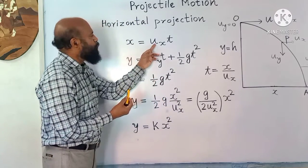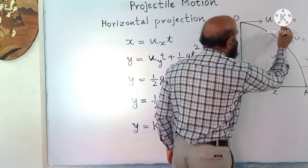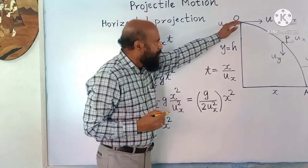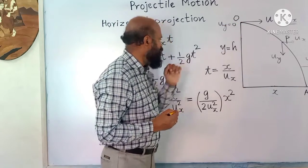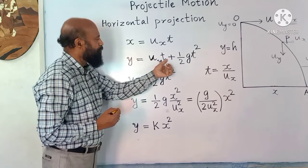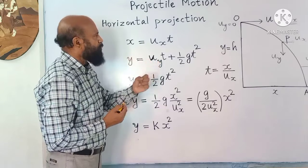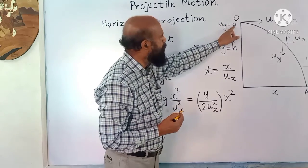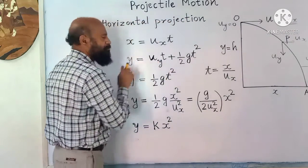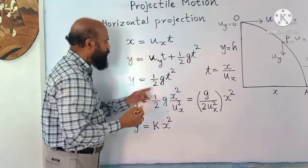The distance covered in the horizontal direction is x = u_x · t, since horizontal velocity remains constant. The displacement in the vertical direction is y = u_y · t + ½g·t². Since the initial velocity in the vertical direction is zero for horizontal projection, u_y = 0, so this term becomes zero and we get y = ½g·t².